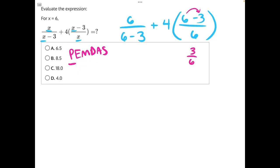And this we can simplify down into, if we factor out the greatest common factor of 3 from the top and bottom, we're left with 1 half. So I'll rewrite this to say 6 over 6 minus 3, plus 4, times 1 half.